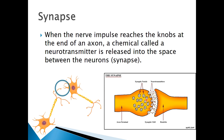Here we have the axon terminal, and the signal is transmitting across this gap called the synaptic cleft to the dendrite of the second neuron. This whole connection is called the synapse, and the chemicals that transmit the signal from one neuron across the synaptic cleft to the next neuron are called neurotransmitters.